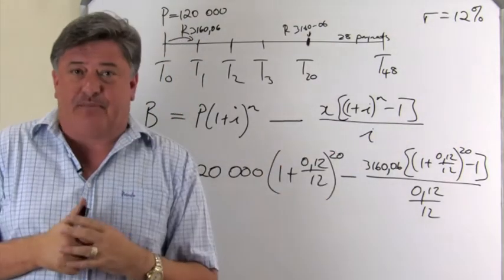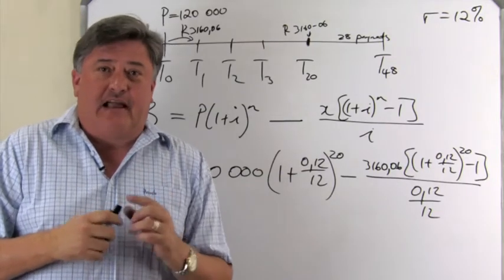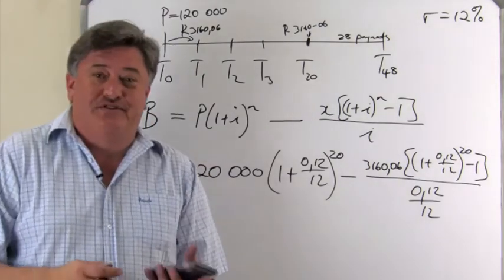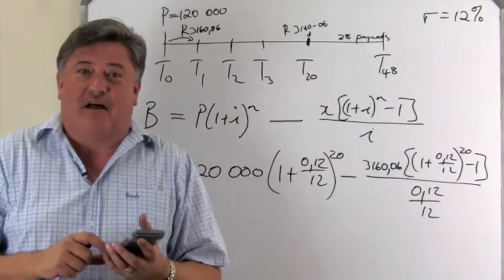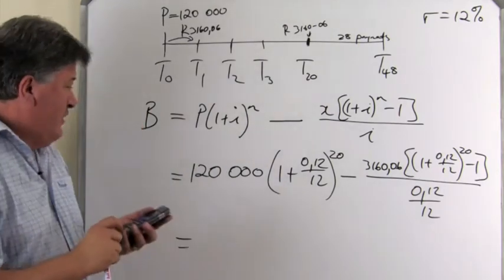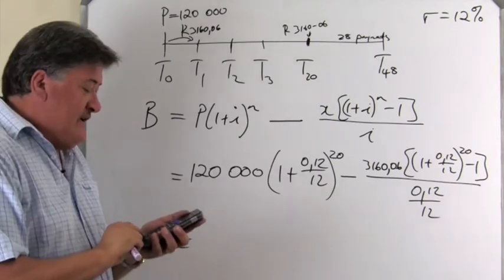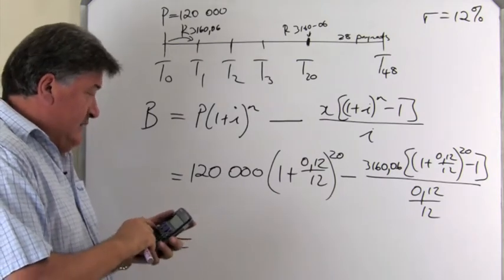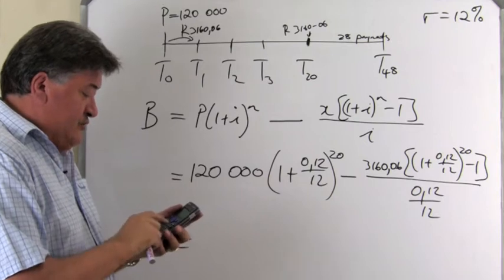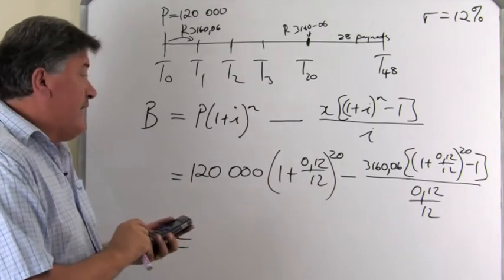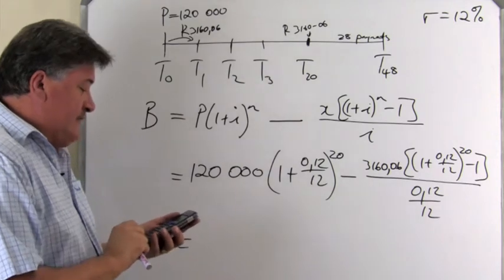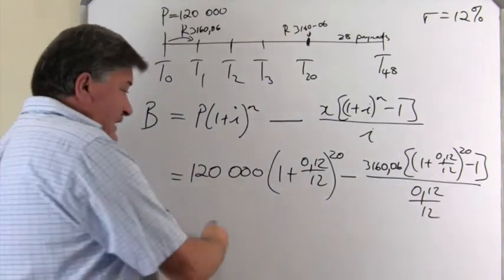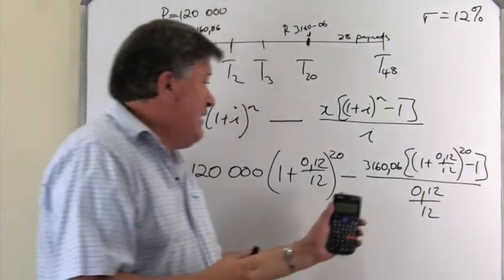And now, we're going to subtract the two. So, let's now take our calculators and let's work it out all at once. Let's do it. I want you to try with me. And let's see if we get the same answer. The first part, not very difficult to work out. It's 120, one, two, three zeros. Times by that bracket of 1 plus 0.12. Denominator of 12. Close the bracket and we raise it to the exponent of 20. Now, I'm going to push equal on my calculator. You may write it down if you want to or you can just leave it on your calculator. And now, I'm going to say minus.